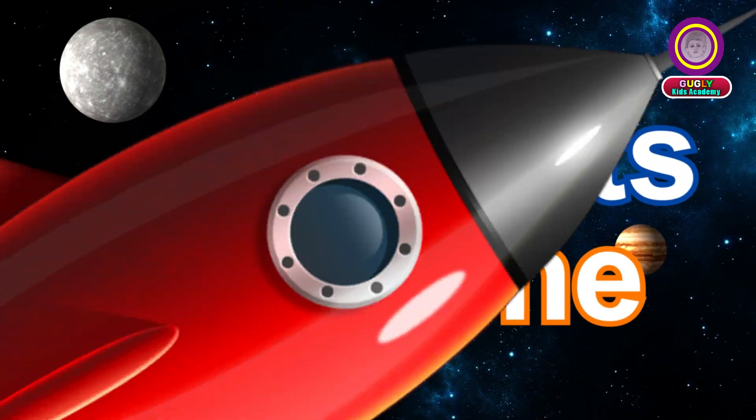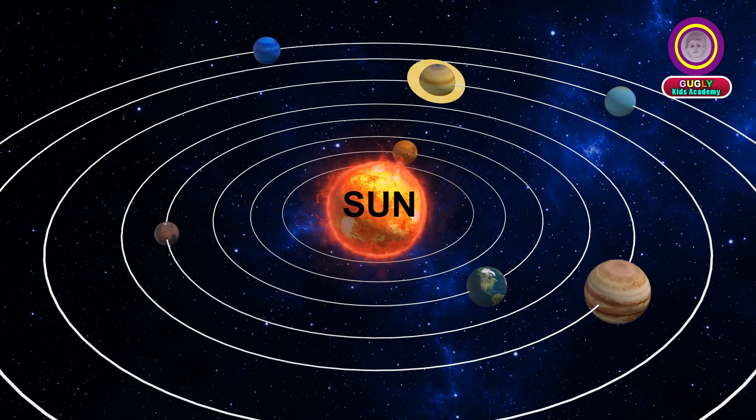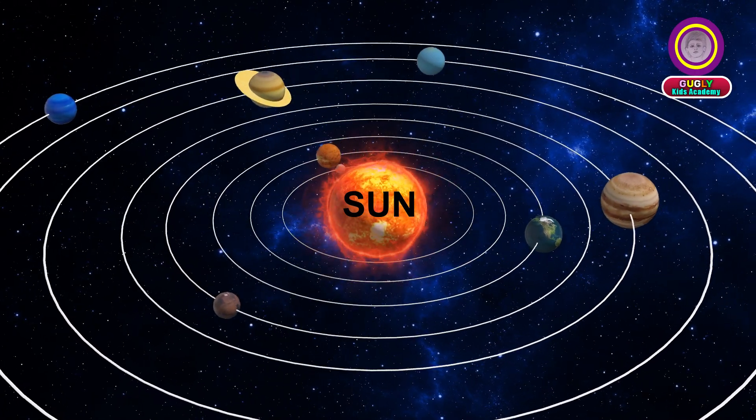There are 8 planets in the solar system.